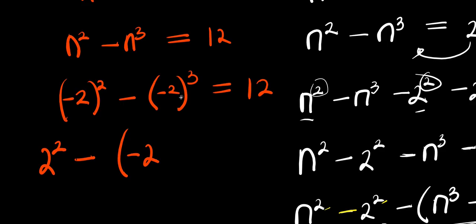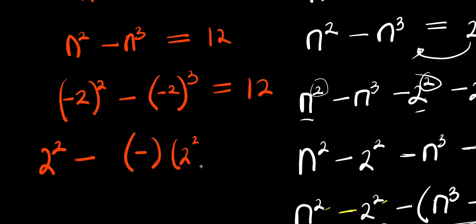And this is just like having -1 times 2³. Because negative raised to the power of 3 is negative, because this 3 is an even number. And this equals 12.